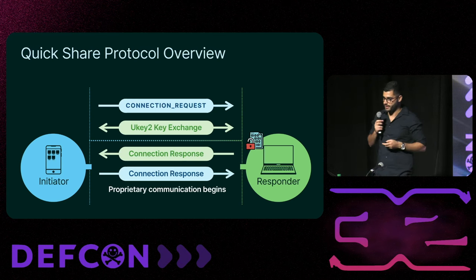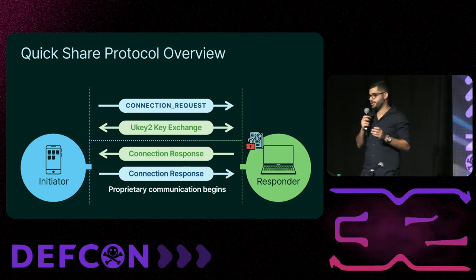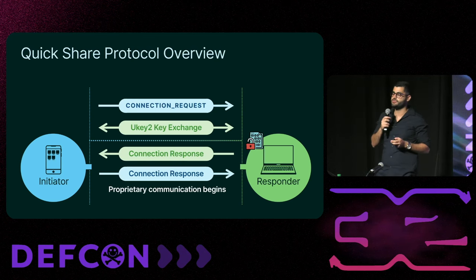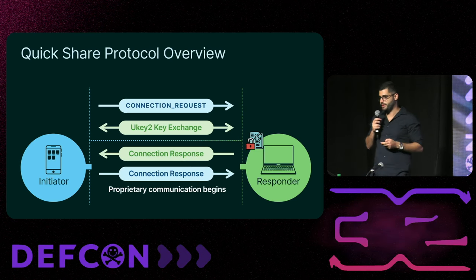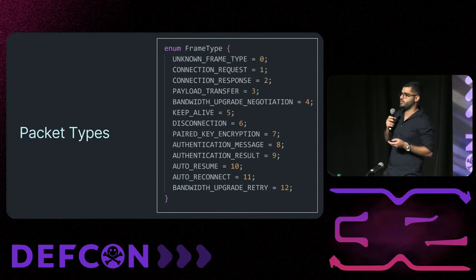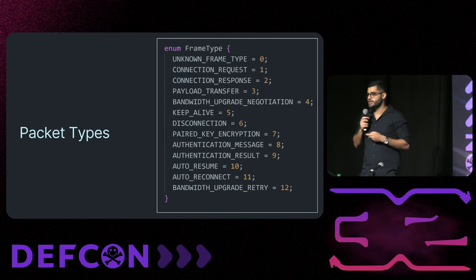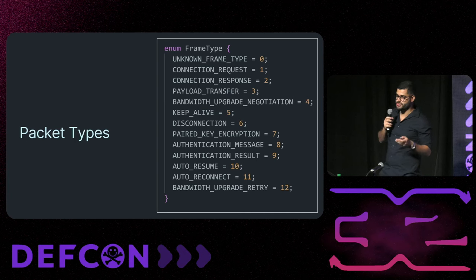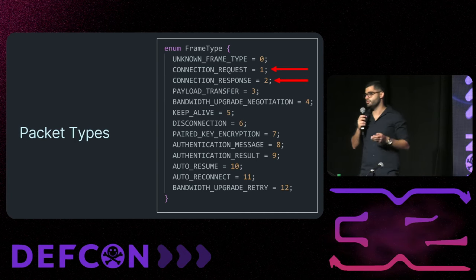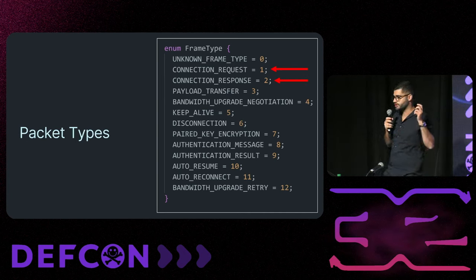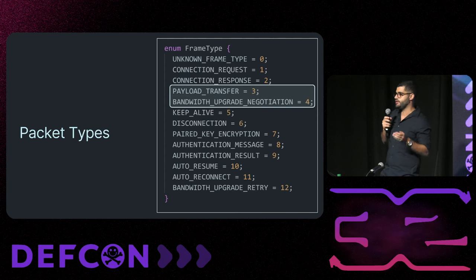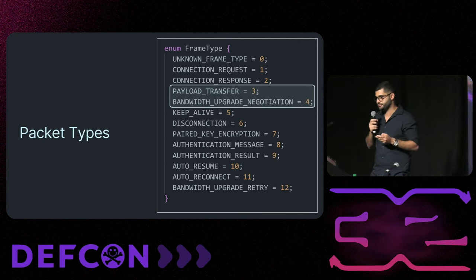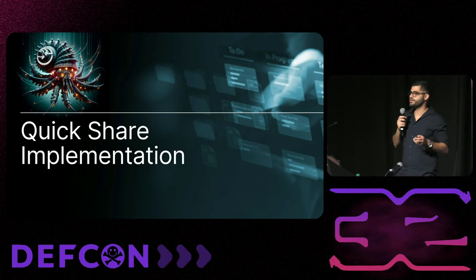Next, the responder sends a connection response packet indicating it accepted the connection, and the initiator responds with a similar packet. At this point QuickShare's proprietary communication begins, using various packet types provided by the Nearby Connections API. We can see all packet types that can be used within the protocol — so far we've seen the connection request and connection response. In our talk we'll focus on payload transfer and bandwidth upgrade negotiation.